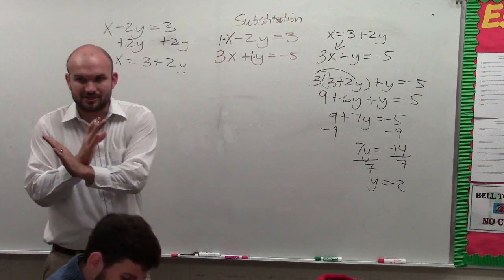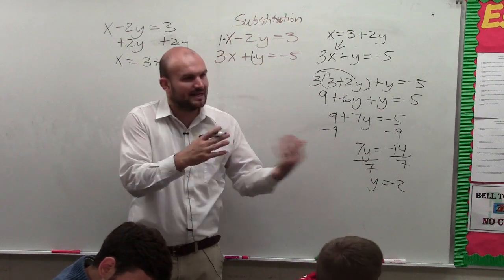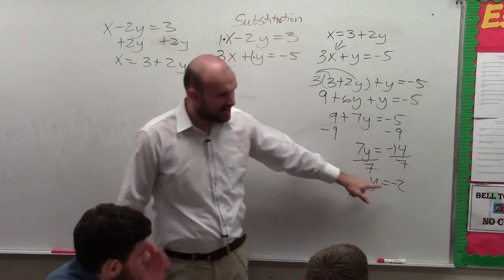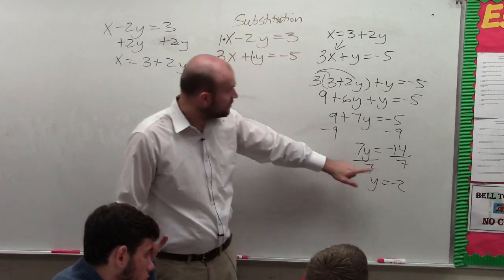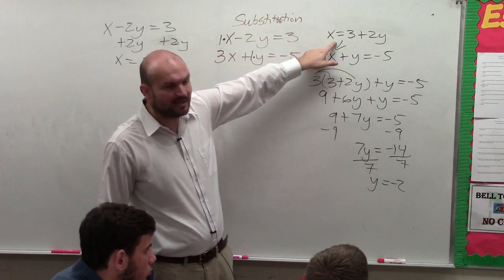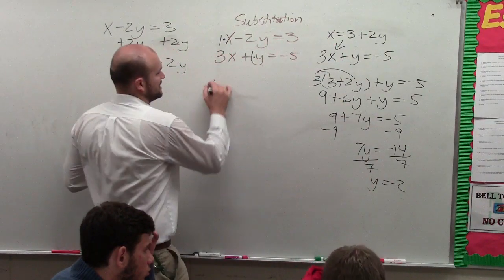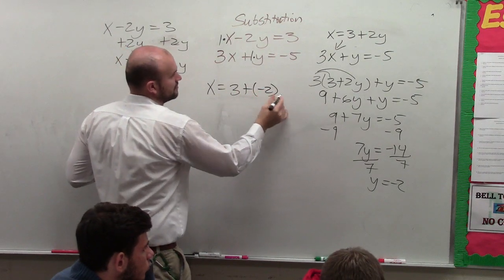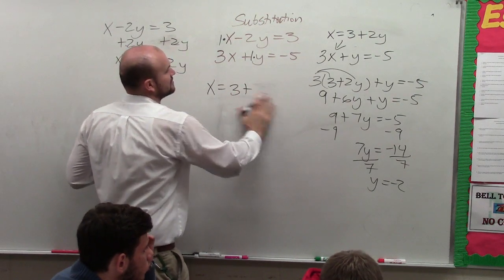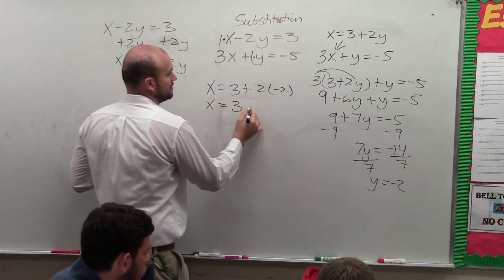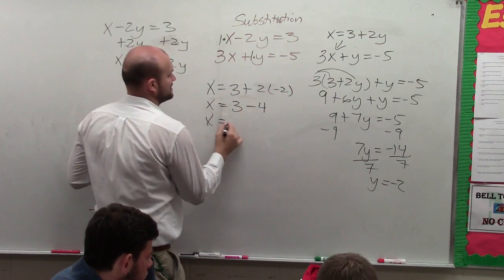But remember, guys, when we were doing the intersection, we had a coordinate point. We had an x and a y. Correct? Right? So therefore, that's the y coordinate. To find the x coordinate, we just need to plug back into our equation. And the best equation to plug into to solve for x is the one that's already solved for x. So I had to say x equals 3 plus negative 2 times negative 2. x equals 3 minus 4. x equals negative 1.